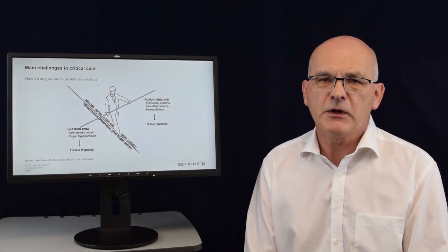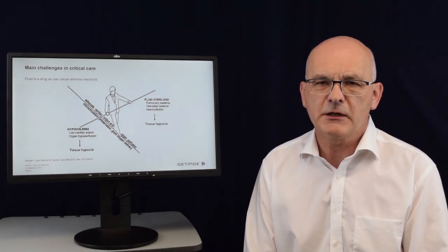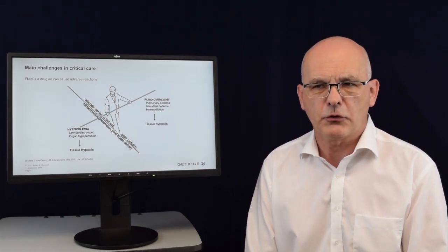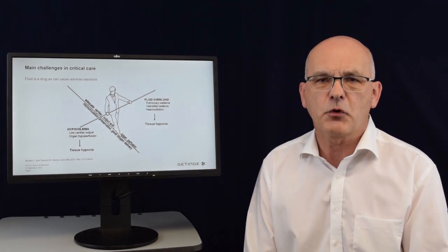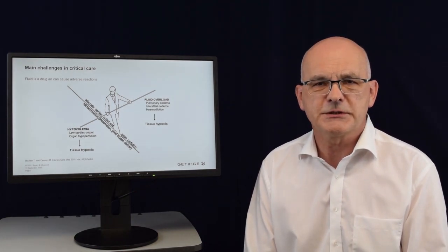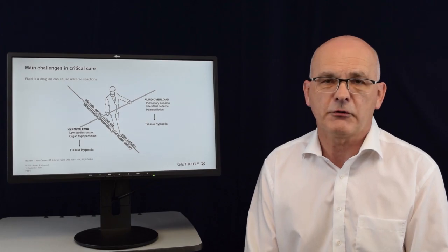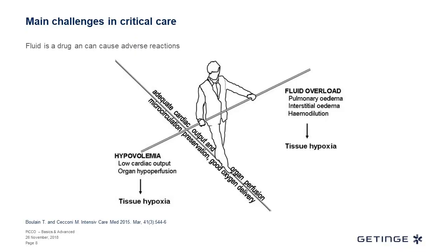When we have the situation of hypovolemia — too little circulating blood volume — this can cause complications and in the end lead to tissue hypoxia. And the same is also true for fluid overload, the situation of hypervolemia. This can also lead in the end to tissue hypoxia, which should be strictly avoided.